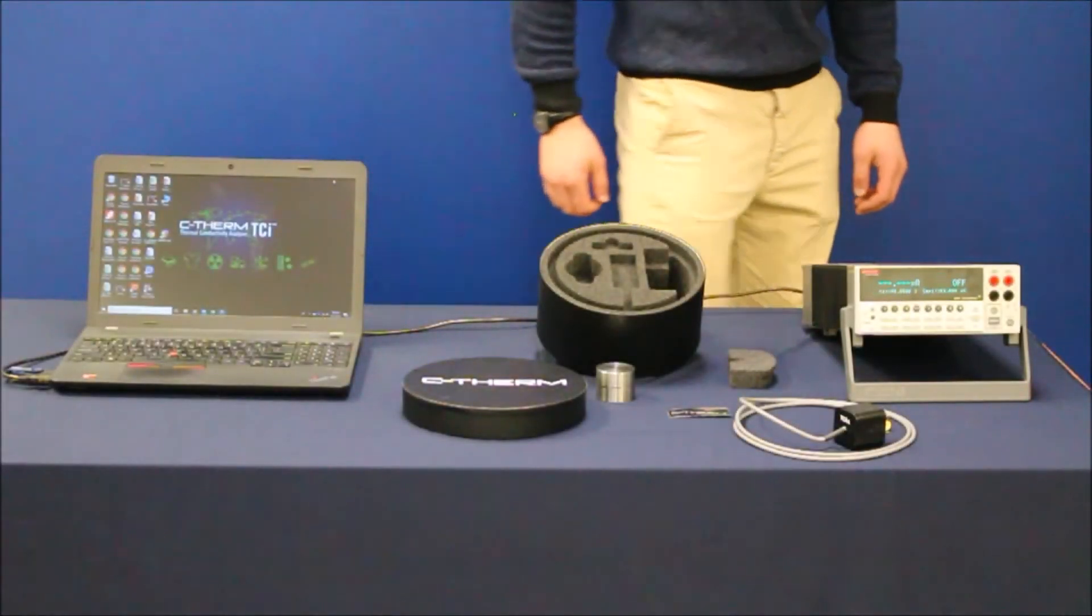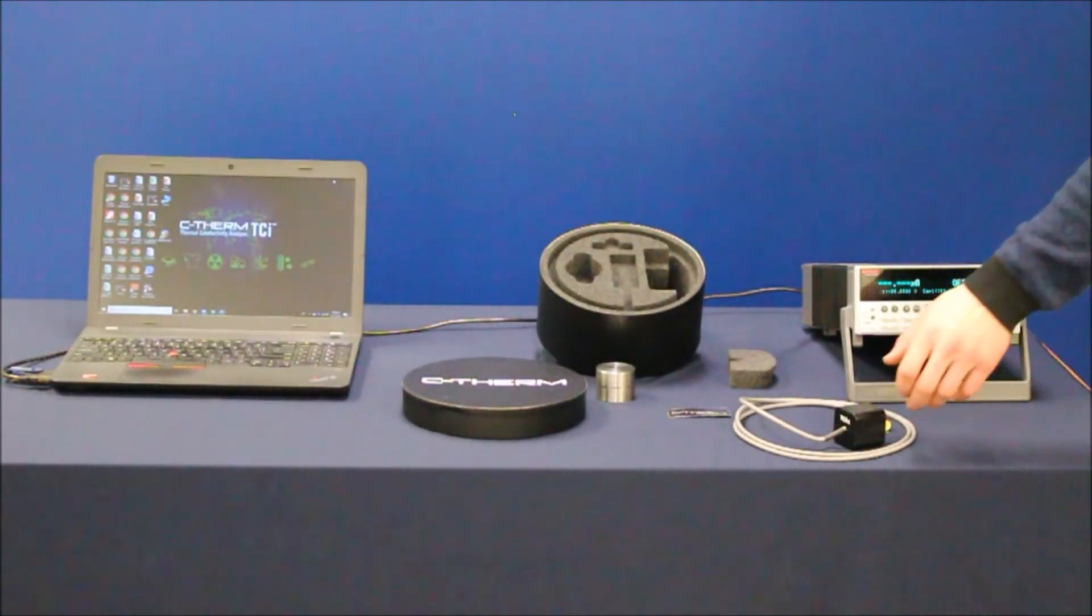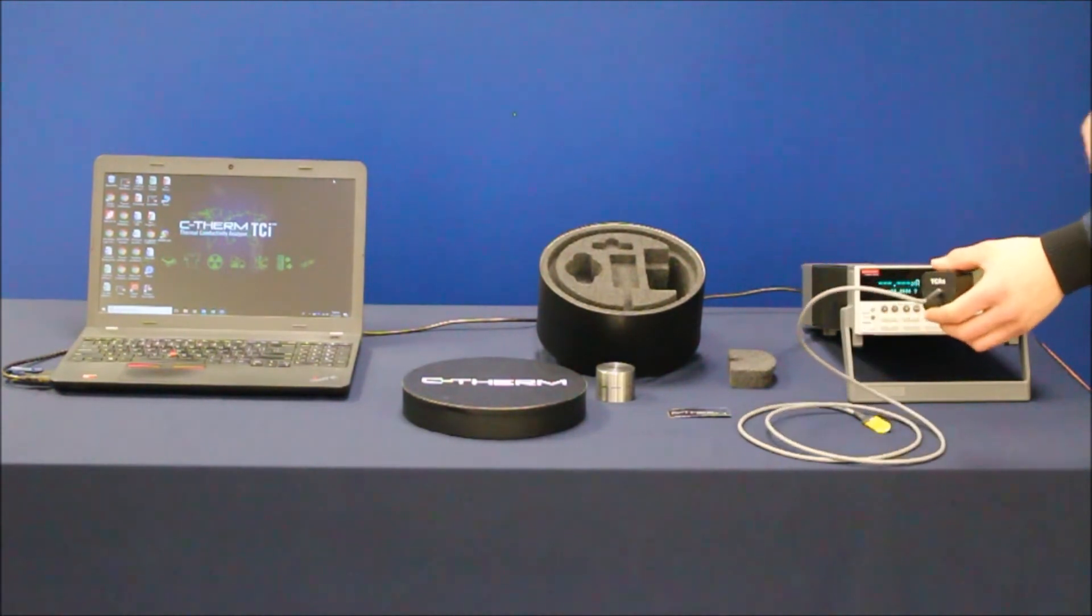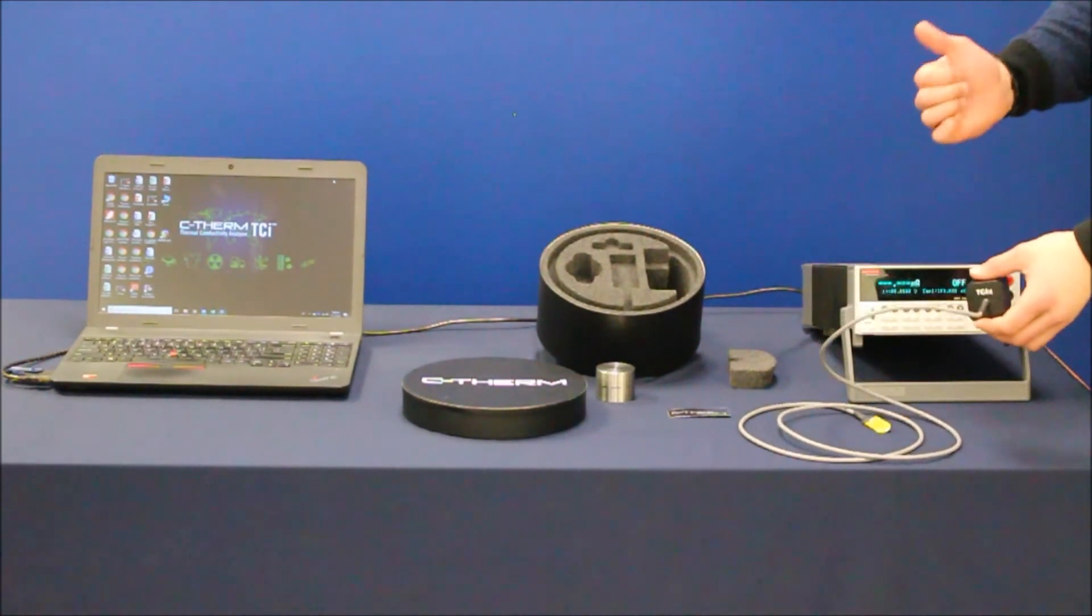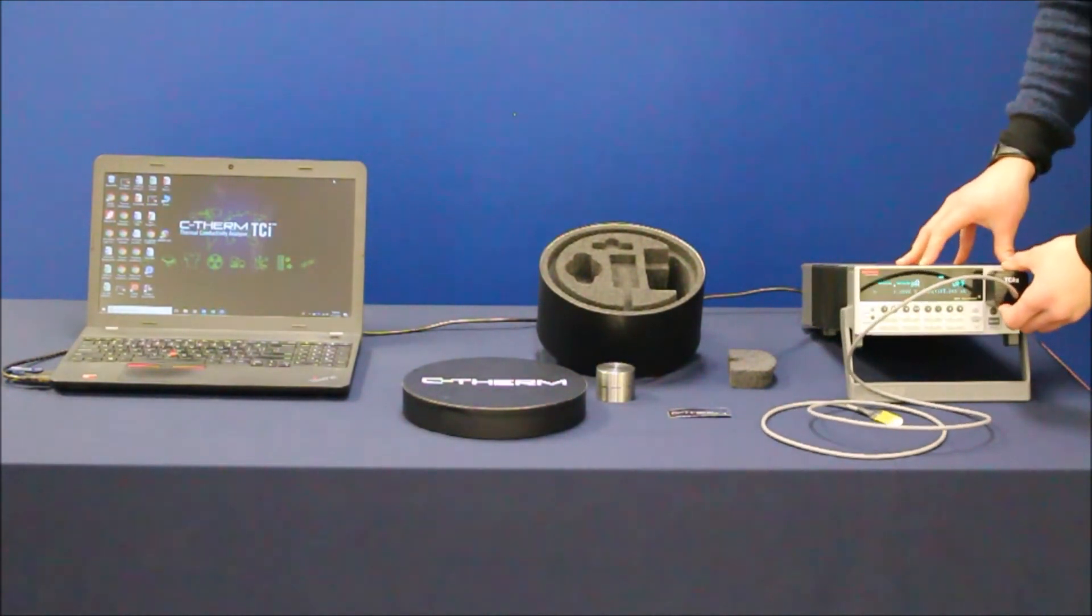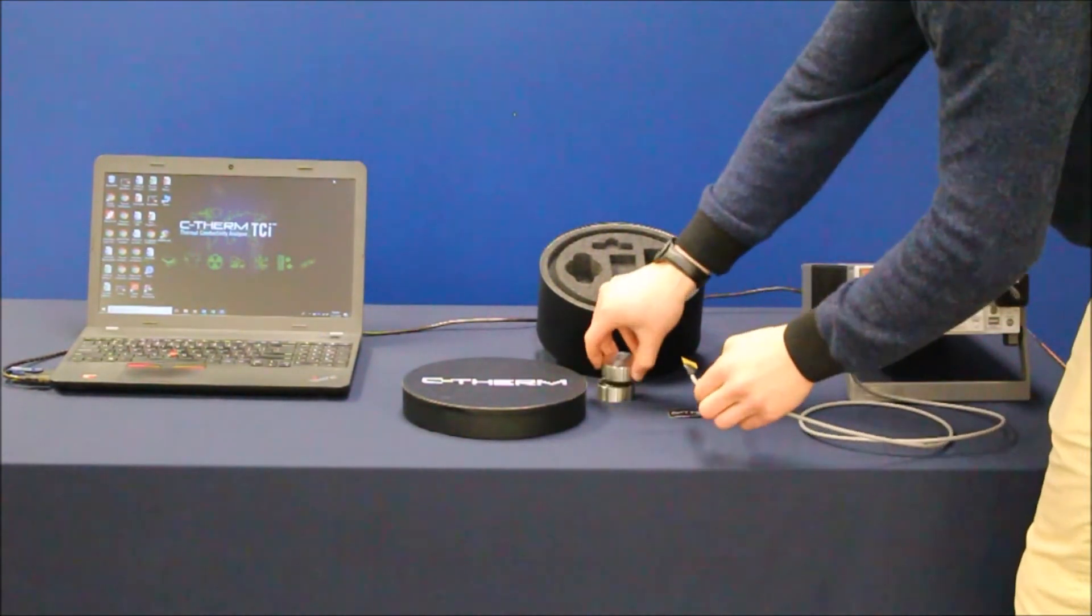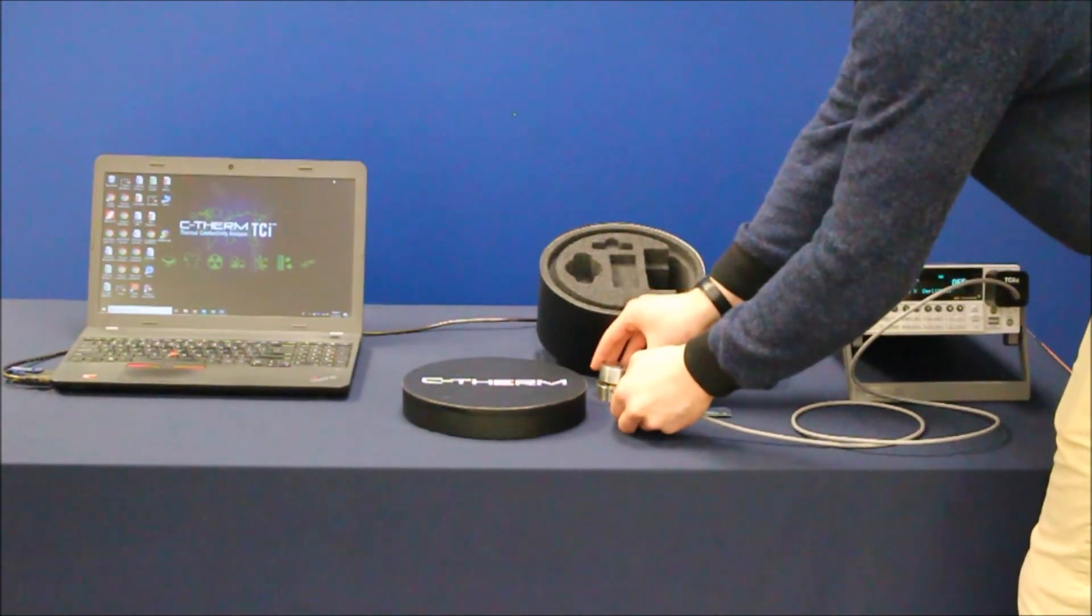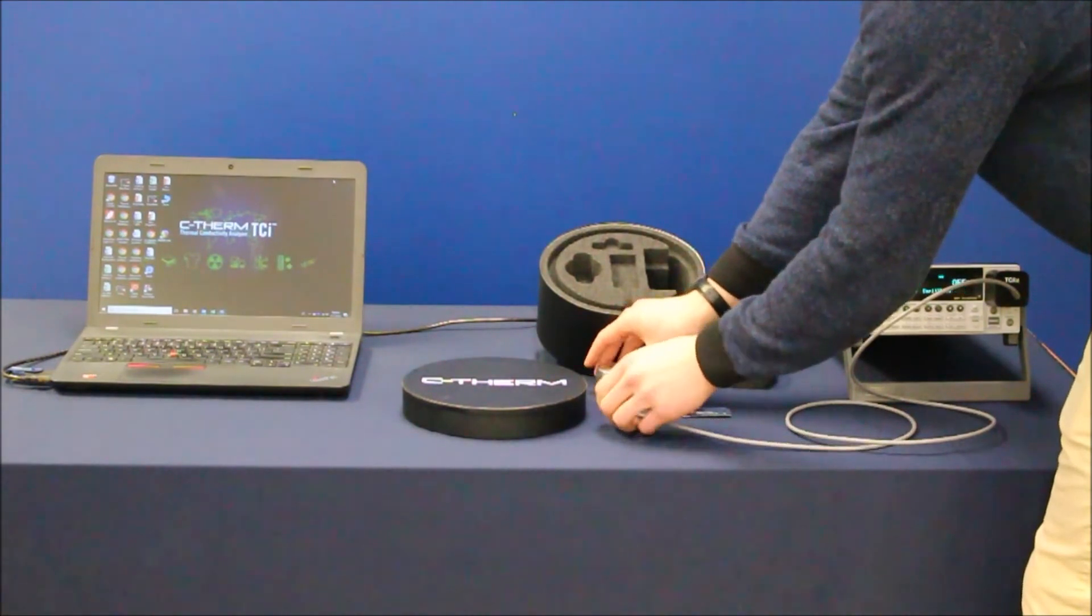Next you're going to want to plug the sensor into your source measure unit using the four-prong plug, ensuring that the TC kit labeled side is up. Then place the sensor between your two reference samples in the center, and place them together.